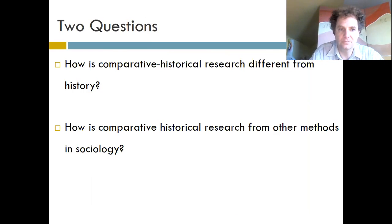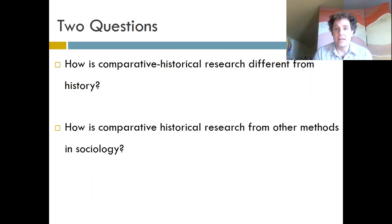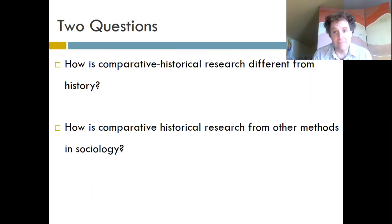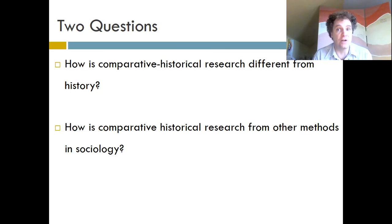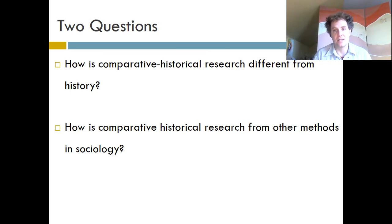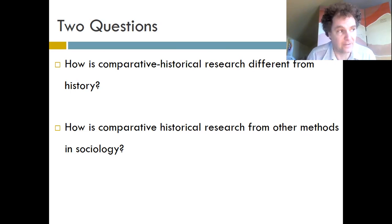That's the first difference: historians tend to give an in-depth analysis of singular historical events, whereas comparative historical research in sociology tends to explain and give a theory for the general social processes that happened in the past. The second difference is that historians tend to stay in the past, whereas sociologists using comparative historical research tend to focus on the present — not just wanting to know why the French Revolution happened, but what could predict a revolution happening in the future.